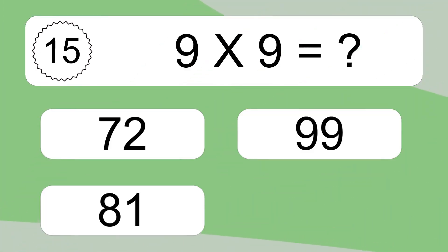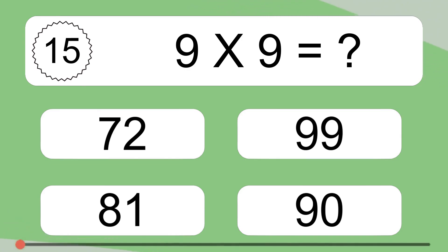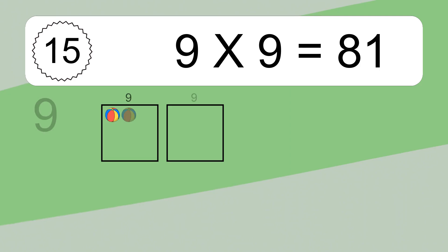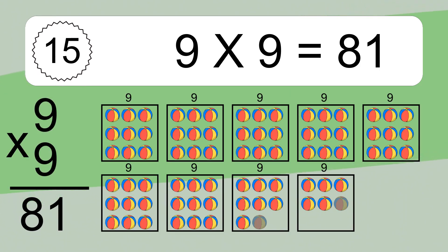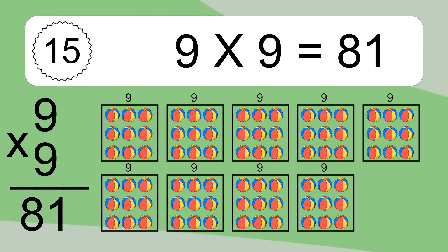9 times 9 equals what? 9 times 9 equals 81. We have 9 boxes, and each box has 9 colorful balls inside. If you count all the balls in all the boxes together, you will have 9 times 9 balls. This equals 81 balls.